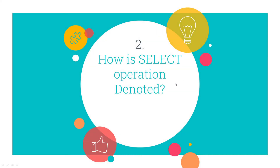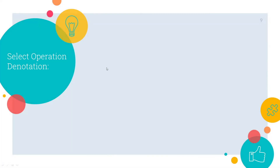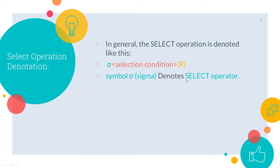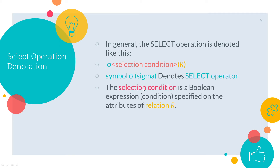Now how is the select operation denoted? In general, the select operation is denoted like this: we have the sigma symbol, then the selection condition, and then the relation table. The symbol sigma denotes the select operator. The selection condition is a boolean expression that specifies the attributes of the relation R — what attributes we want, that selection condition specifies. And the relation R is the table.